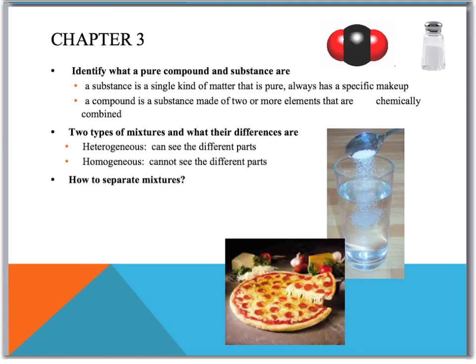Going to start out here. We're going to start with chapter 3, so we'll start with 3 and then go to 4 and 5. We start out with pure compound and a substance. A substance is a single kind of matter that is pure, always has a specific makeup. So our example is going to be the salt. A compound is a substance made of two or more elements that are chemically combined. And here, we're going to go with our water.